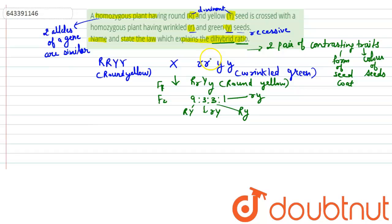The law that explains this di-hybrid ratio is that R is independent of Y. It means that this rounded form does not always remain with yellow. It is not compulsory that rounded form will depend upon yellow. Similarly, this wrinkled form will not always be paired with small y. This is law of independent assortment.